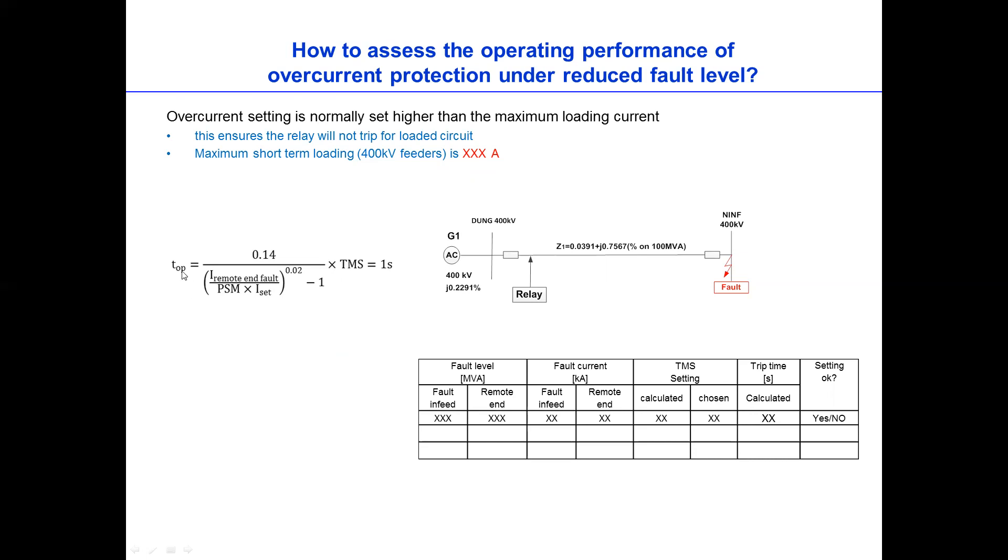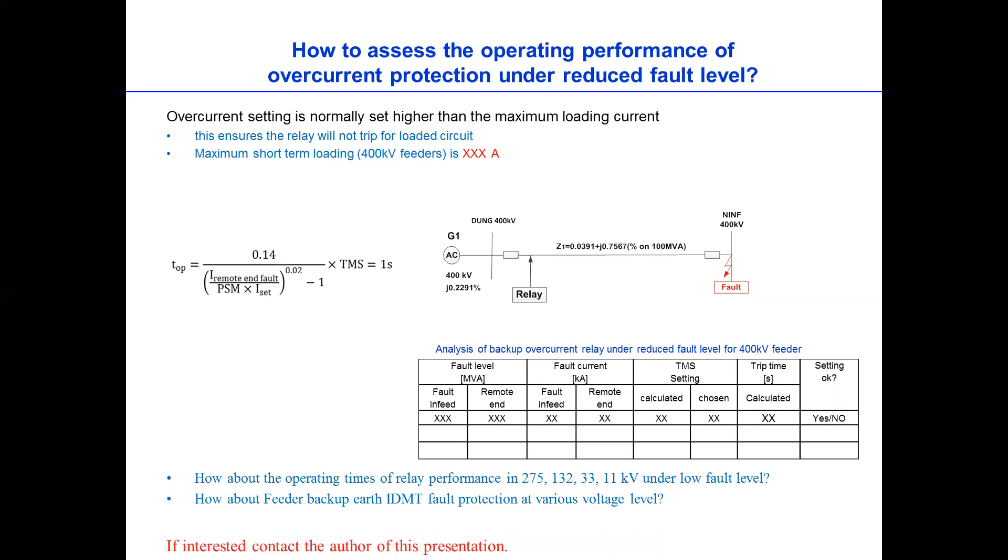So say we have 400 kV and then we have fault at the remote end. Then how do we calculate, say for example, maximum short term loading for 400 kV feeder is x amp or kilo amp. So we can calculate, of course, operating trip time of the relay using this formula. So let's say if at strong fault level, the trip time is one second because the generator is strong, how about if we reduce this fault level? So for example, if we reduce this fault level from the generator, how do we calculate? Do we first calculate the TMS? Or how about the trip time? So will the setting be okay? Yes or no? How do we assess? And then how about the operating time of the relay at different voltage levels and the varying fault level? And of course, how about the overall protection at various voltage levels? If you're interested to know or to learn more about this, well, please do contact me.